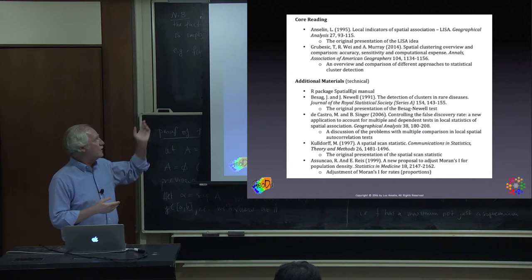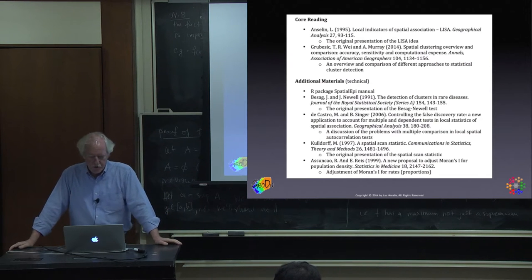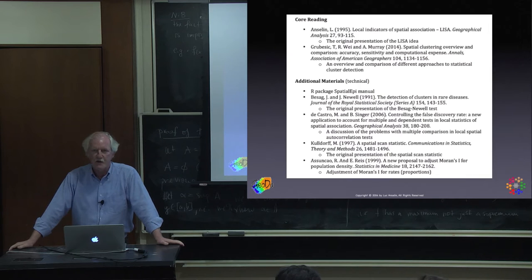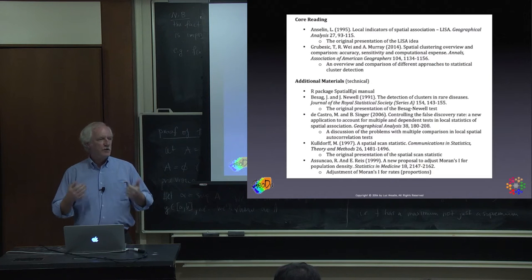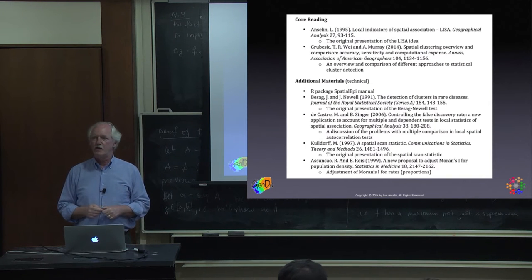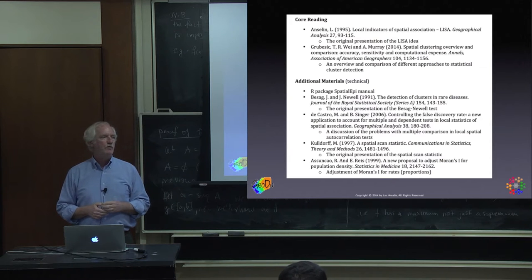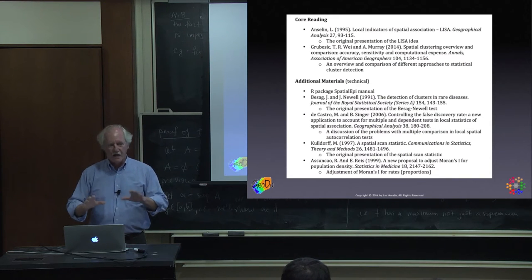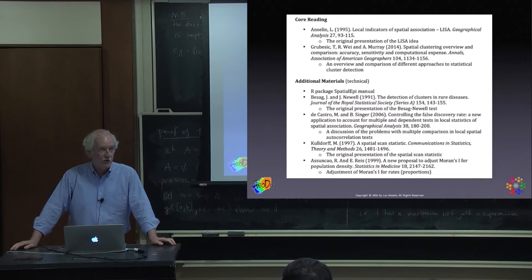Starting with my 1995 LISA paper, which gives the general idea of local statistics, and a recent overview paper covering different flavors of the problem — local spatial autocorrelation indices, scan statistics, and operations research-inspired methods where finding a cluster is an application of integer programming. We won't get into that, but it's a very important literature.